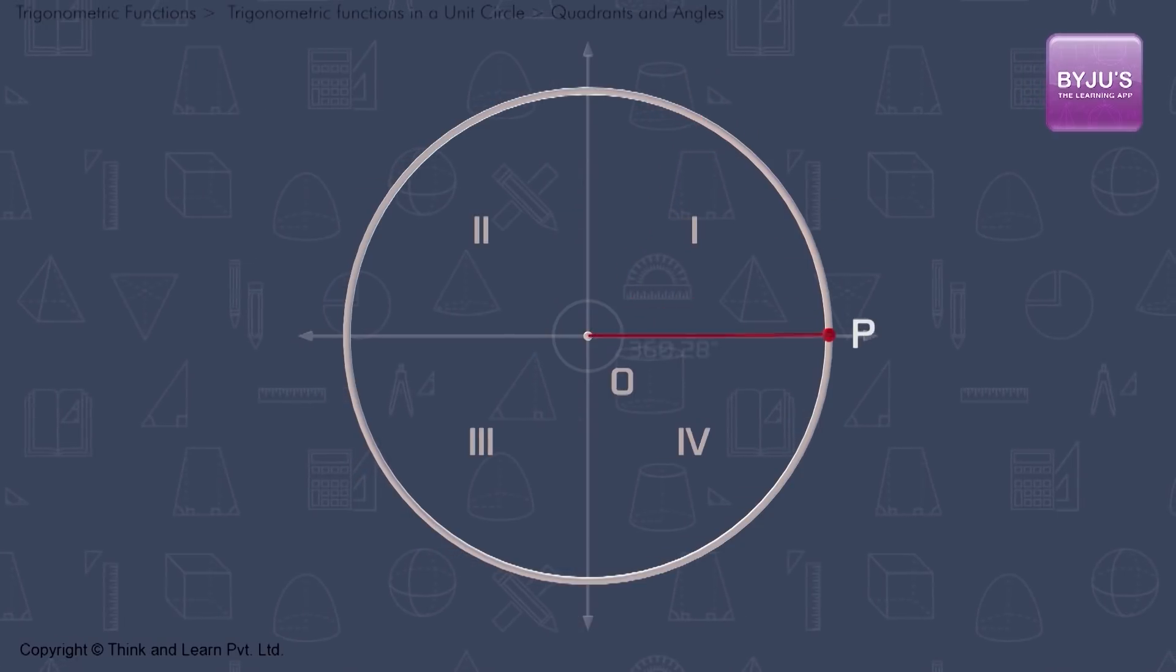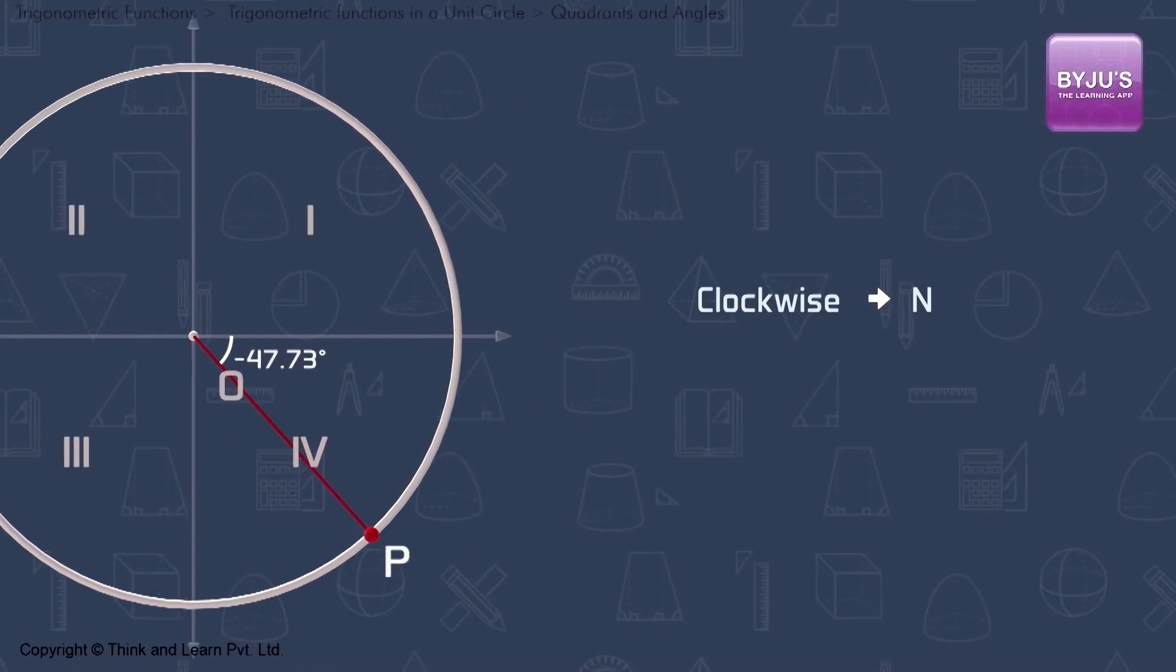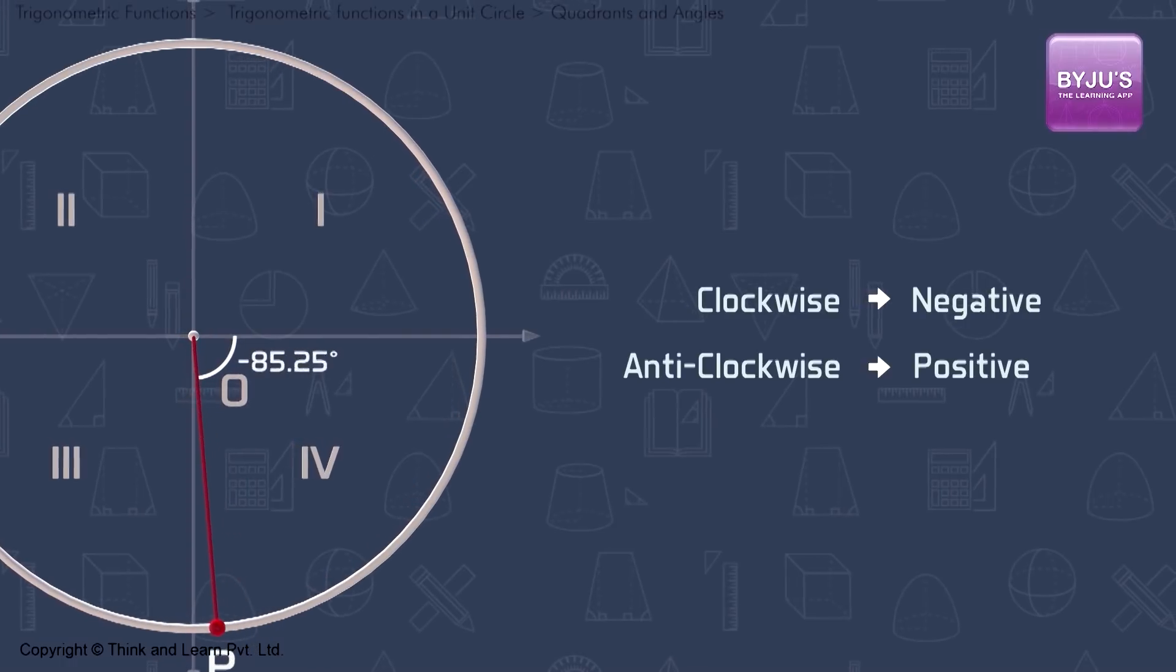If OP is moving in the clockwise direction from positive x-axis, we already have discussed such angles are taken as negative angles.